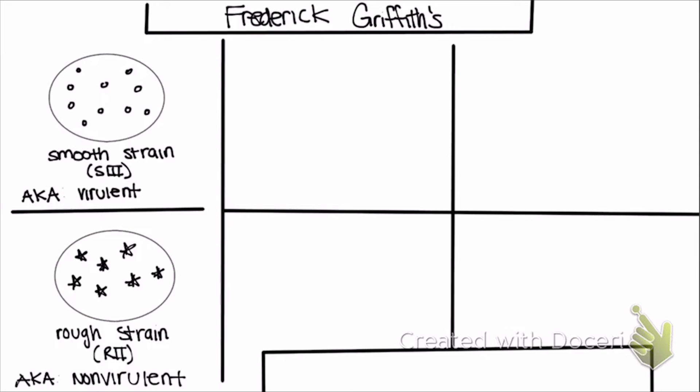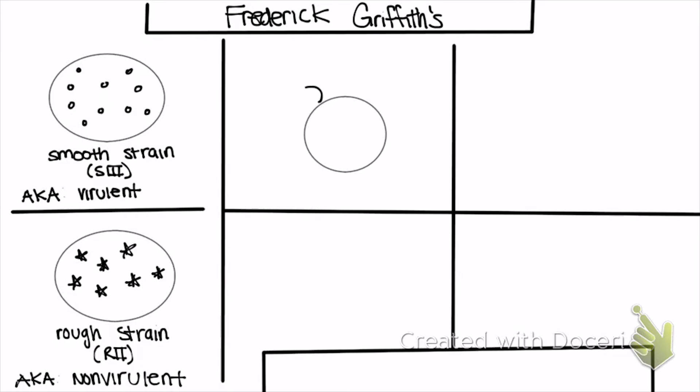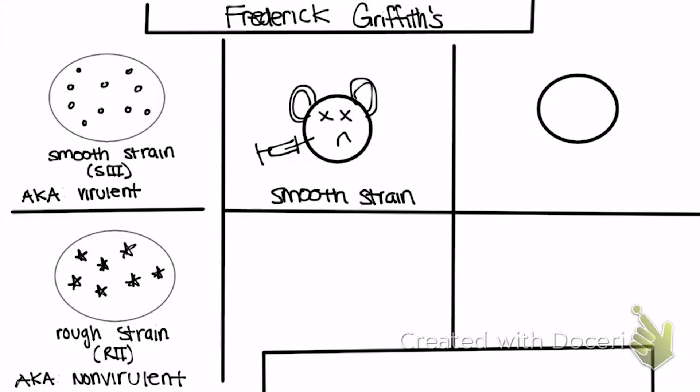So what he did was he took it and injected the smooth strain first into a mouse. When he injected the smooth strain, it caused the mouse death. So he said, okay, what happens if we do it to a rough strain? So he injected the rough strain into the mouse and the mouse lived, which confirms the fact that the smooth strain protects the bacteria from being killed, which kills the mouse.